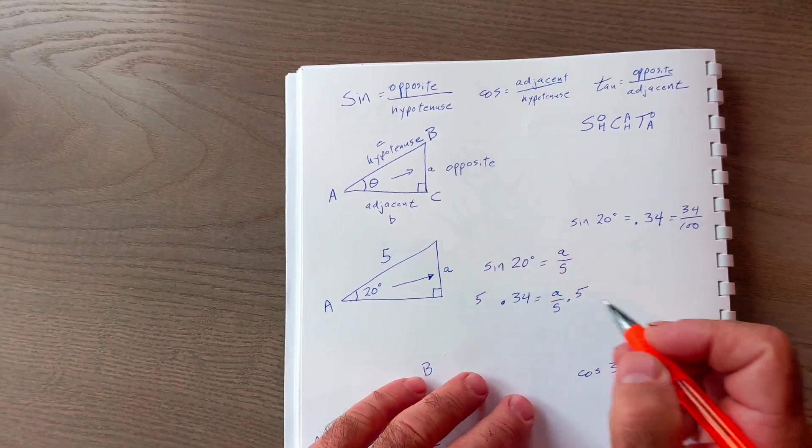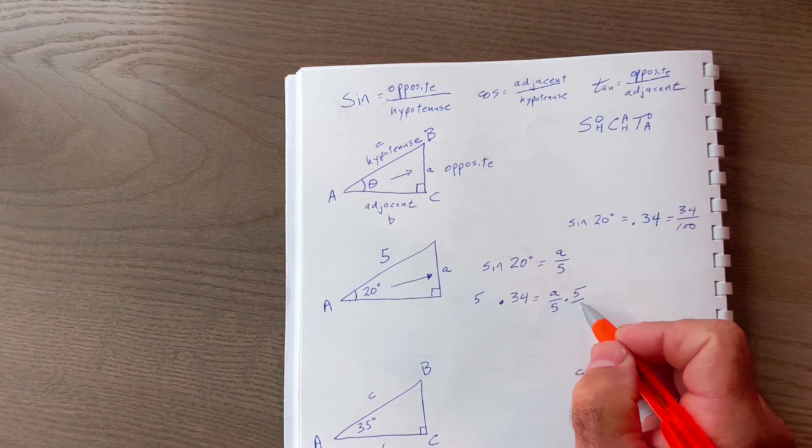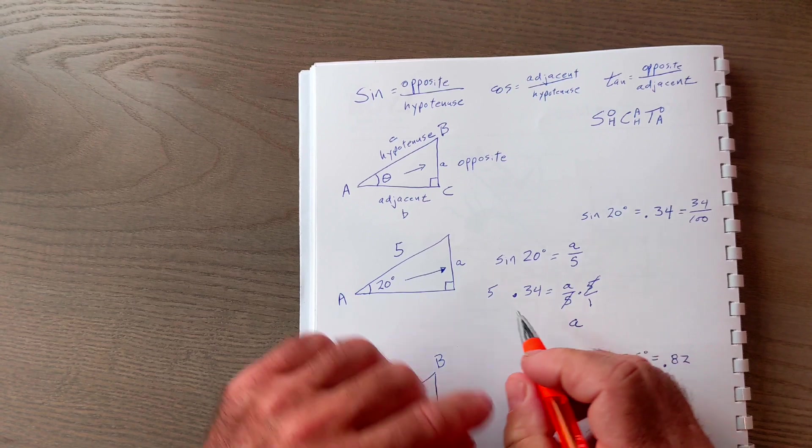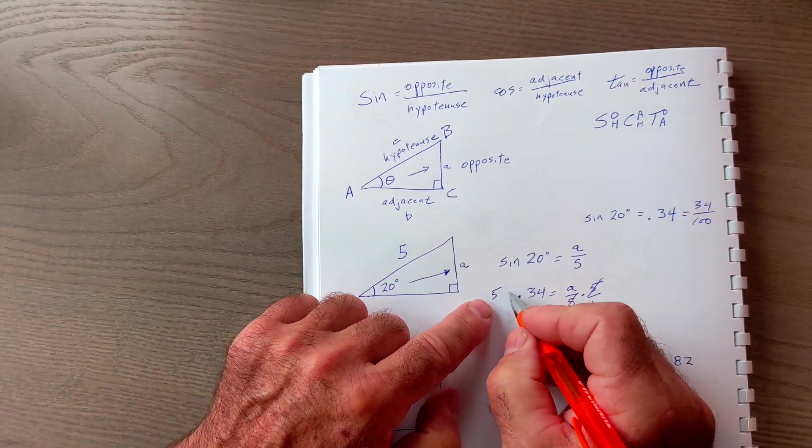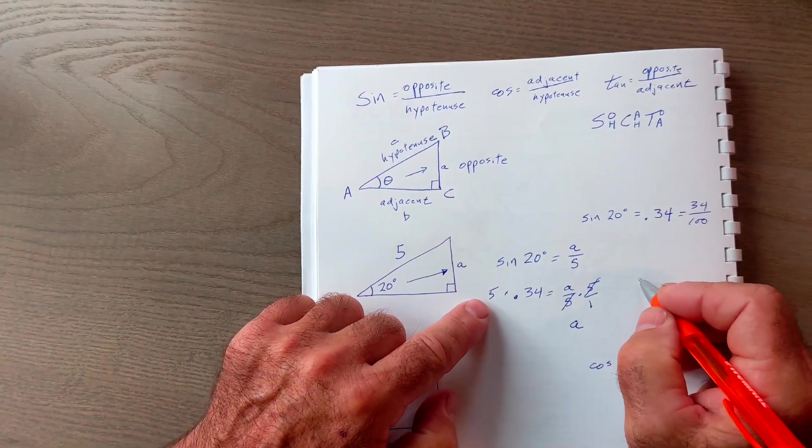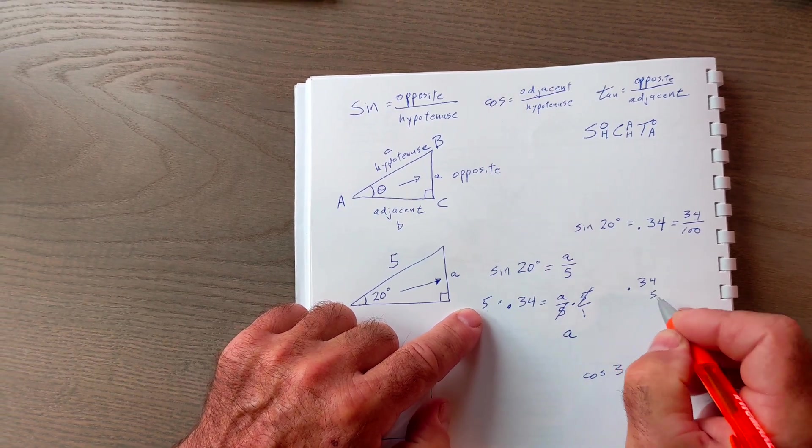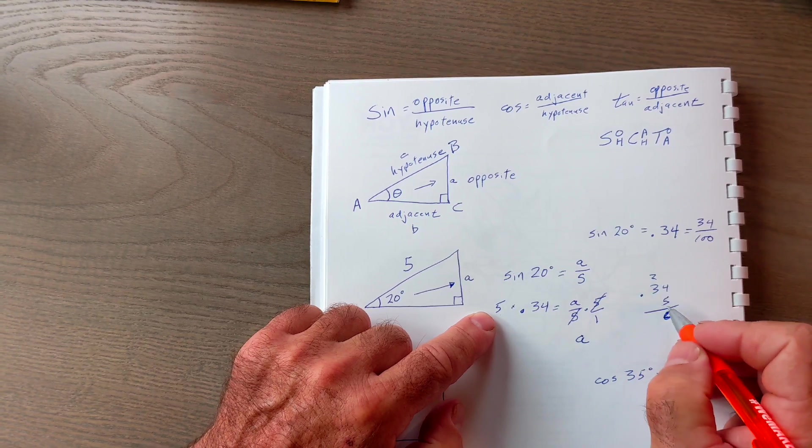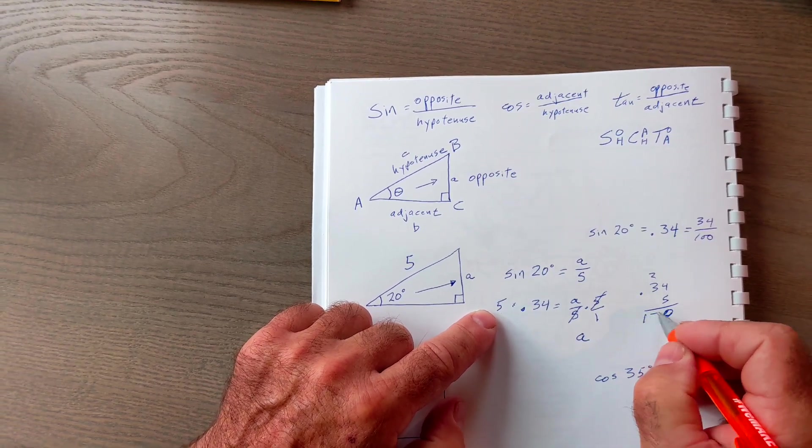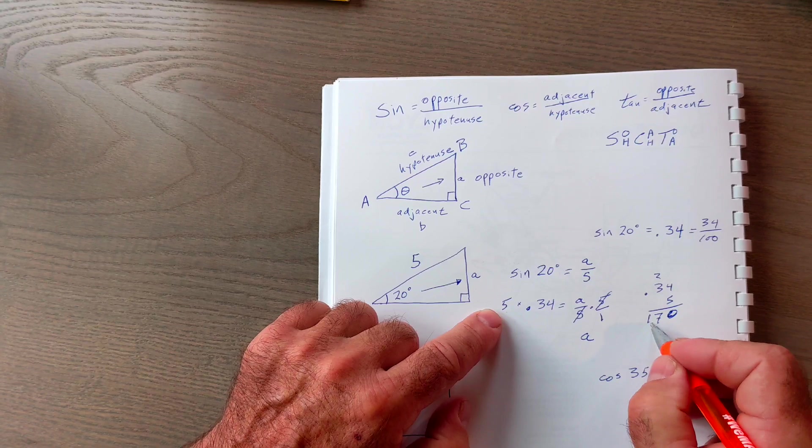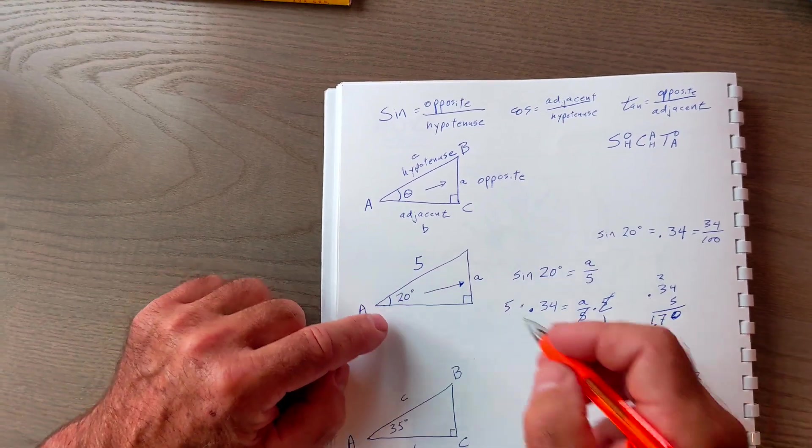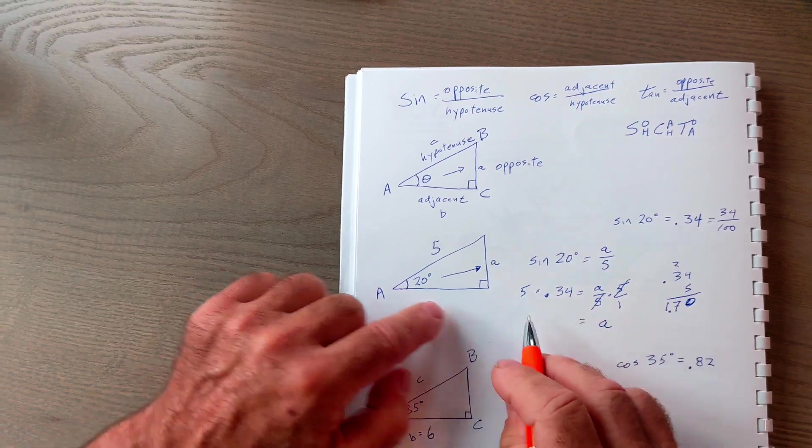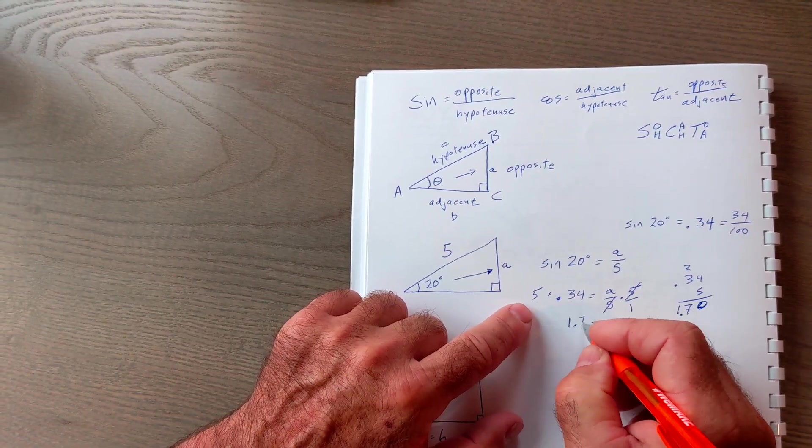So if I do that over there, I'll do it over here. This is really 5 over 1. These 5s will cancel, giving me A by itself. Now I just have to do 5 times 0.34. 0.34 times 5 is going to give me a 20. Carry the 2, 15, 16, 17. My decimal place is over 1, 2, and I have 1.7. So what I'm saying here is A by itself is equal to 5 times 0.34, or 1.7.